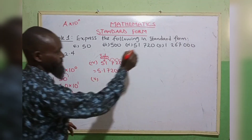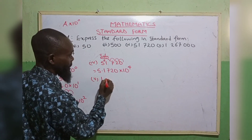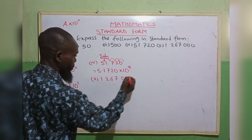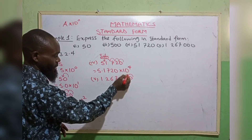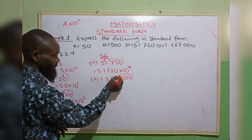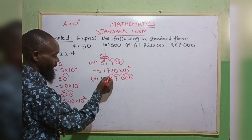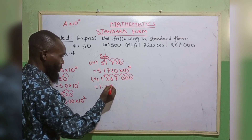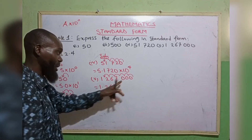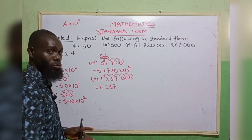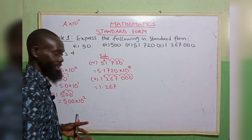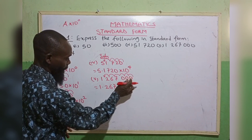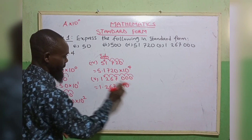The fifth one: 1,267,000. Moving the decimal point forward — 1, 2, 3, 4, 5, 6 places — gives 1.267. If you like, you can include the trailing zeros or omit them. So we have 1.267 multiplied by 10 raised to the power — how many times? 1, 2, 3, 4, 5, 6 — that is 10 raised to the power 6.